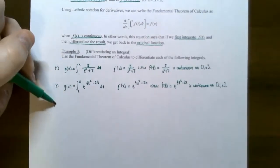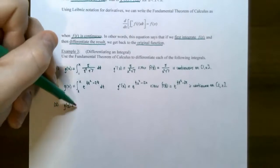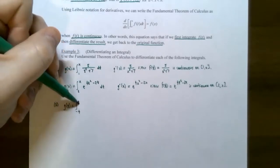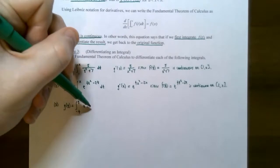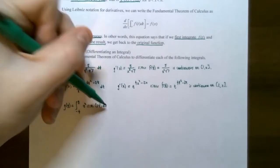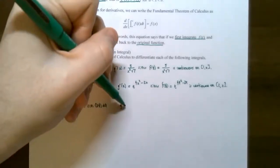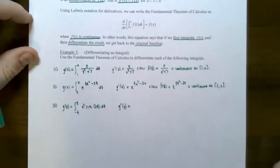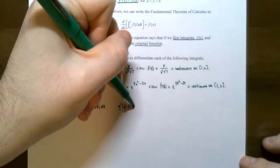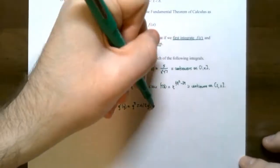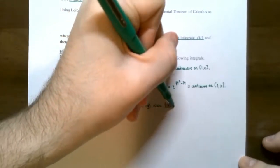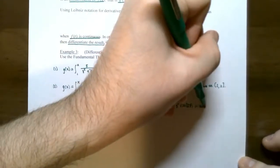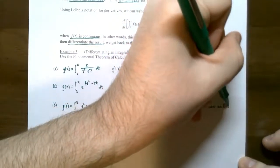Number three: the function is g of y — so the upper limit of integration is in terms of y. The integral goes from negative four to y of t squared times sine of five t, dt. Since the upper limit is y and the lower limit is a constant, g prime of y equals y squared times sine of five y, since the integrand t squared times sine of five t is continuous on the interval negative four to y.